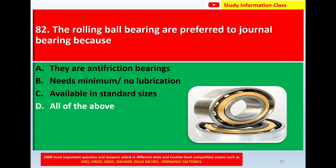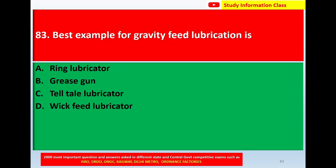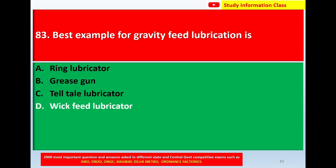Question number 83: The best example of gravity feed lubrication is — option A: ring lubricator, option B: grease gun, option C: tell-doll lubricator, option D: wick feed lubricator. Correct answer is option D: wick feed lubricator.